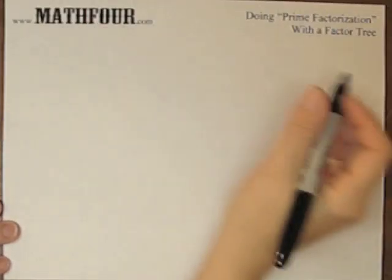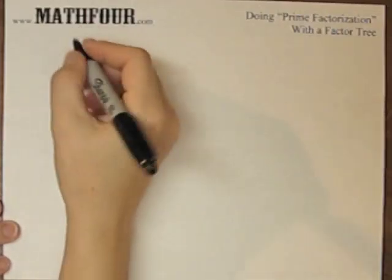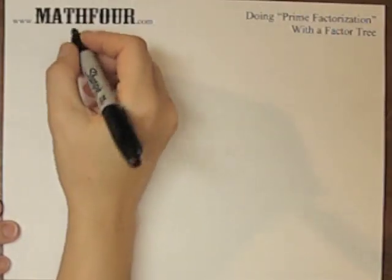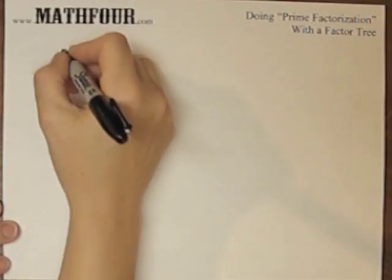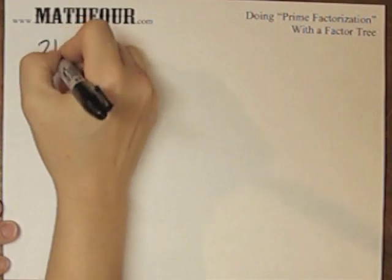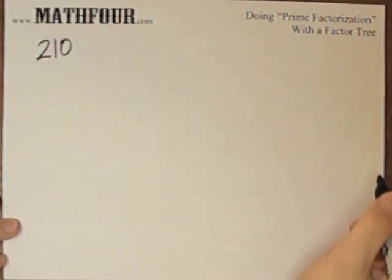This is our first example of doing prime factorization with a factor tree. I'm going to use the number 210.